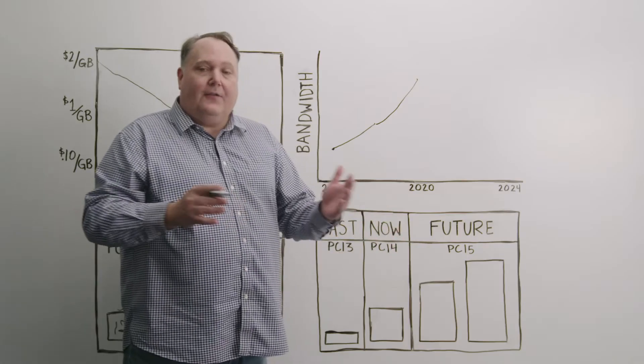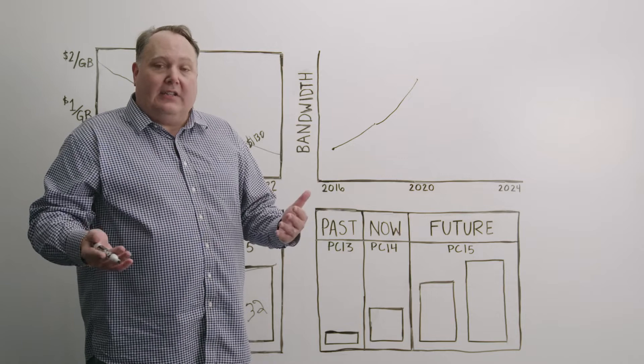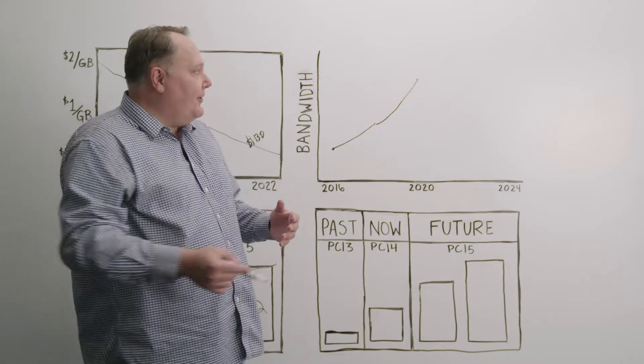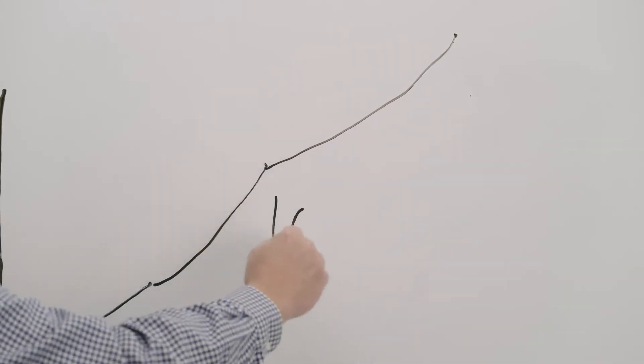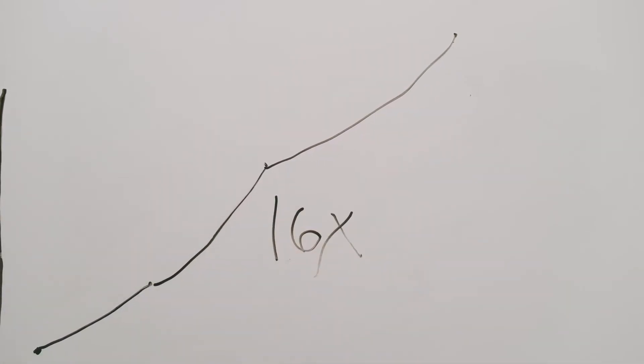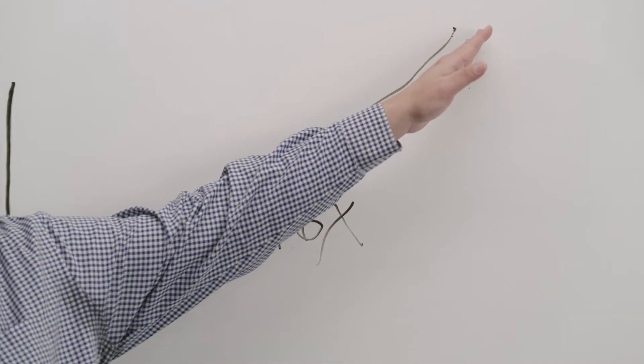And then from PCI 5 to PCI 6, we doubled again to 200 gigabits per second. The net increase has been this dramatic 16x increase in speed from PCI 3 to PCI 6.